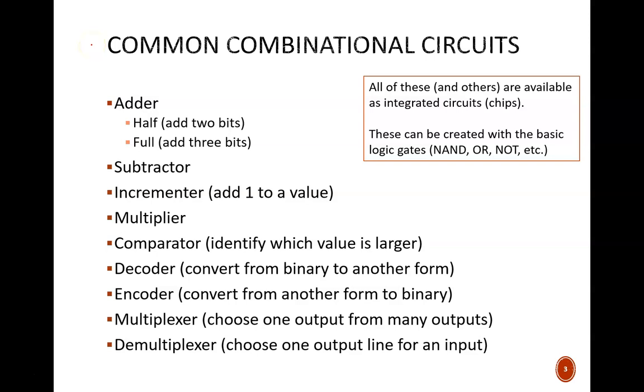The big point is that computers are built to perform specific tasks. Most of these tasks are rather complicated, like sorting a list of names or playing a YouTube video. These complicated functions are built from smaller functions, which are built from smaller functions, which may be built from these basic combinational circuits. And these common circuits are not magic. They themselves are built from the logic gates already discussed in this course.